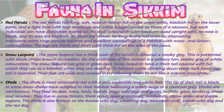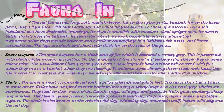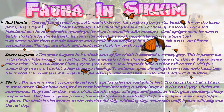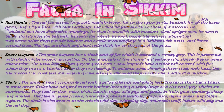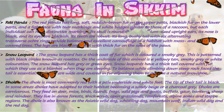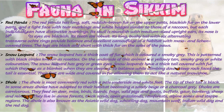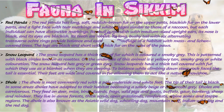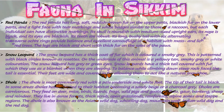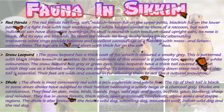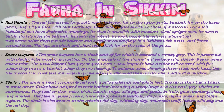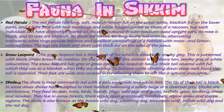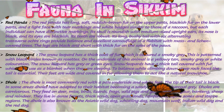Now I will tell you about fauna in Sikkim. The first fauna is the Red Panda. The Red Panda has long, soft, reddish-brown fur on the upper parts, blackish fur on the lower parts, and a light face with tear markings and white badges similar to those of a raccoon, but each individual can have distinctive markings. Its skull is roundish with medium-sized upright ears, its nose is black, and its eyes are blackish. Its long, bushy tail with six alternating transverse ochre rings provides balance and excellent camouflage in its habitat.